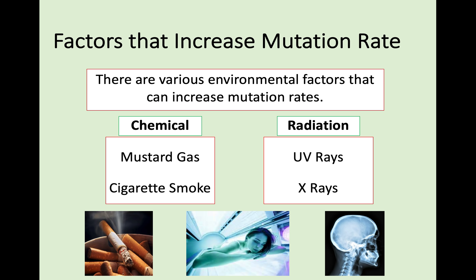There are some different factors called mutagenic agents that can increase your chance of having a mutation. These are sorted into chemical and radiation. Chemical factors that can increase your mutation rates are mustard gas and cigarette smoke. In terms of radiation, it's UV rays and X-rays. UV rays can increase your mutation rate and therefore increase your likelihood of things like skin cancer.